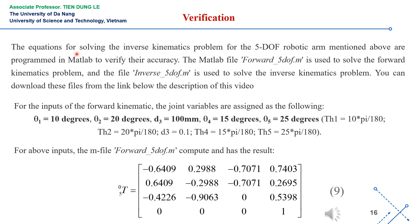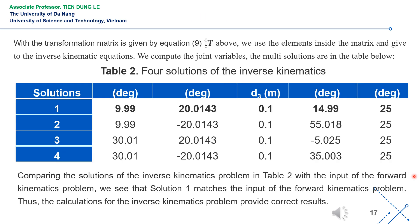To verify the correctness of the forward kinematics and inverse kinematics equations we have developed, we write M-file programs in MATLAB and use specific data for calculations. Initially, we assign a specific set of values to the robot's joint variables as shown on the slide. With these specific joint variable values, the forward kinematics program will calculate the homogeneous matrix that describes the orientation and position of the end-effector, link 5, of the robot relative to the base frame 0, yielding specific results as in equation 9 on the slide. Next, we substitute the values of the components in the matrix from equation 9 into the inverse kinematics equations for the MATLAB program to calculate the joint variables. The program produces four sets of solutions as shown in Table 2 on this slide. Among the four sets of solutions, we observe that solution 1 matches the initially assigned values. This demonstrates that the inverse kinematics problem has been correctly solved, indicating that the kinematics equations were accurately formulated.